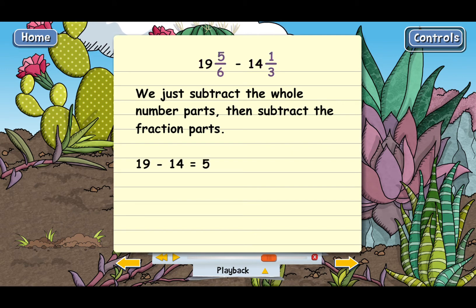And then for the fractions, we have five-sixths minus one third. Why don't you figure out what number to multiply the top and bottom of one third by to make the denominators the same? Good.